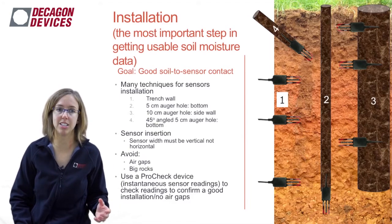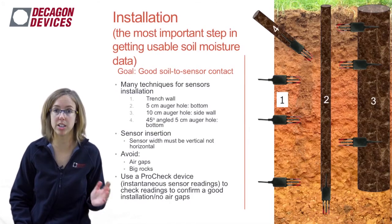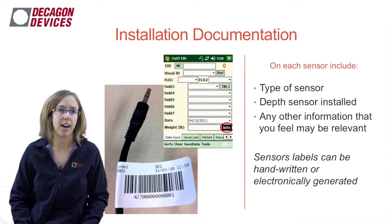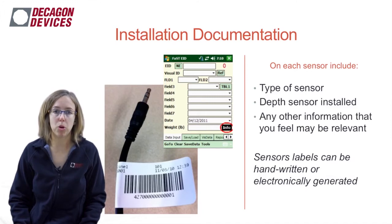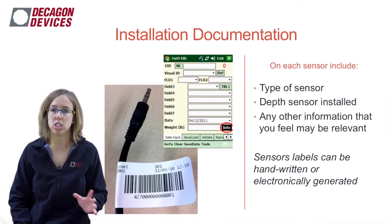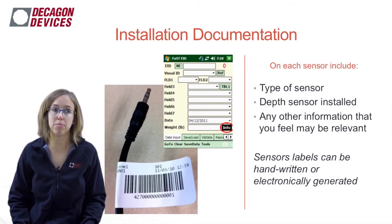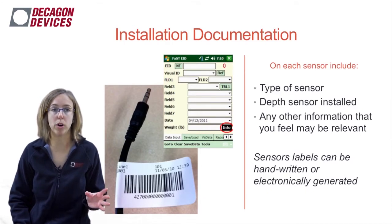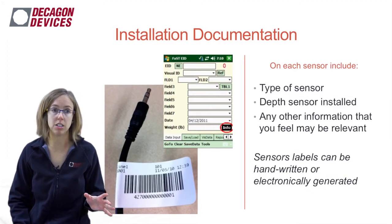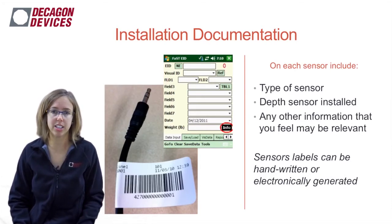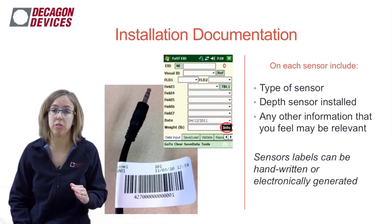ProCheck is a not very expensive device and it's going to save you a lot of time and worry. If you know those sensors are reading well when you leave your installation, you won't have to worry for a while. Also make sure to label your sensors — write down the type of sensor and at what depth it's installed. If someone else is in the field or you forget the manual, this is a good secondary reminder. If you're installing hundreds of sensors, you could even get an electronic labeling device to barcode them, but masking tape and a marker is plenty.